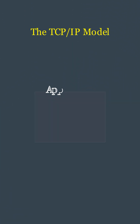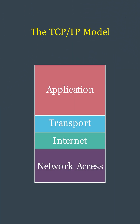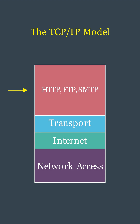The TCP/IP framework is a set of communication protocols used to interconnect network devices on the internet. It has four layers, each with specific functions. The application layer is the topmost layer where user interaction happens; it includes protocols like HTTP, SMTP, and FTP, providing services directly to user applications. The transport layer ensures reliable data transfer between devices; the main protocols here are TCP and UDP.